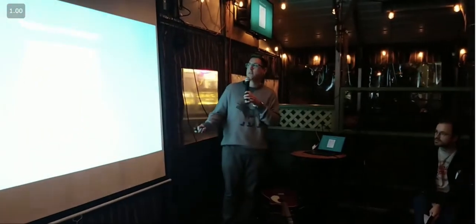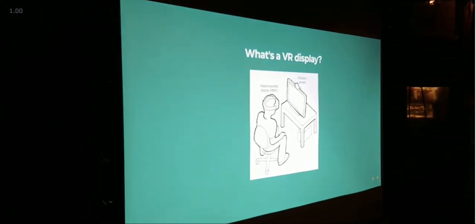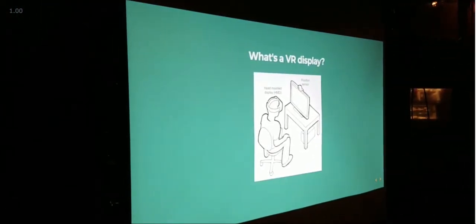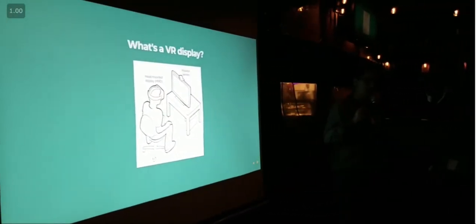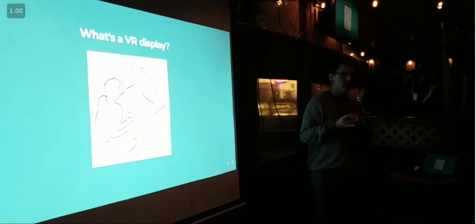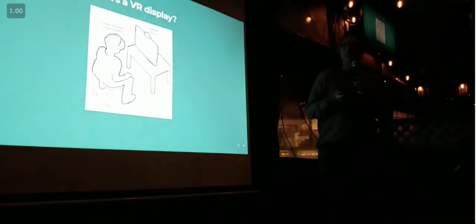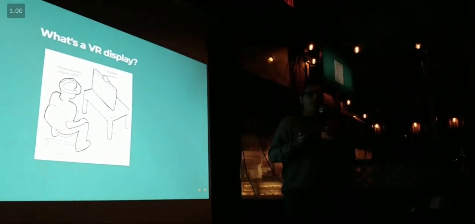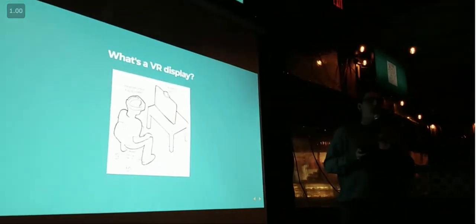Before we get into what A-Frame is, what is a VR display? This is a really simplified version. Generally you have a head-mounted display that gives you a first-person immersive experience, and some way of tracking — usually with a position sensor — where your head is. Most modern systems give you controllers that are tracked in space that simulate hand input. A lot of people have been wondering how the web could help us handle this really new input system.